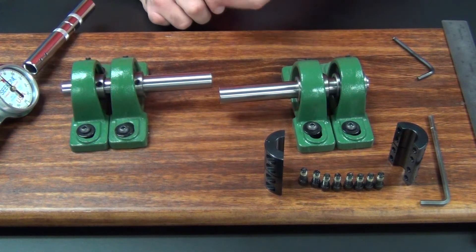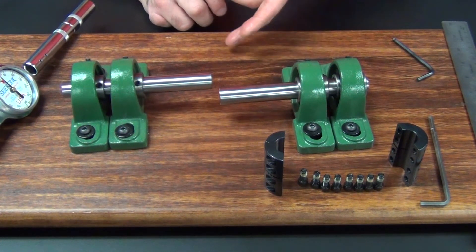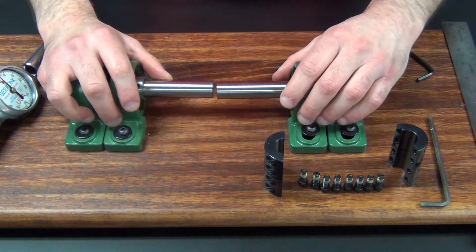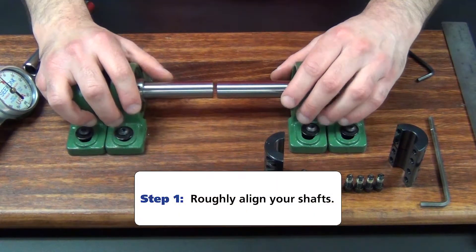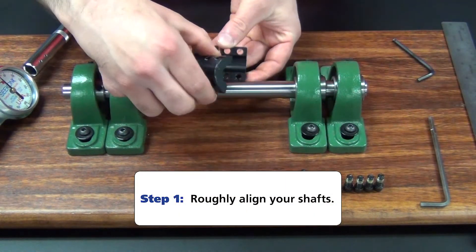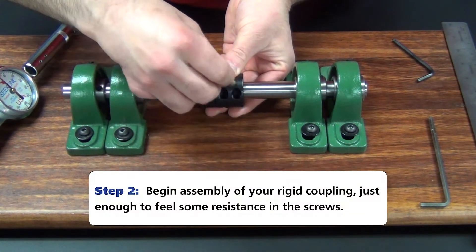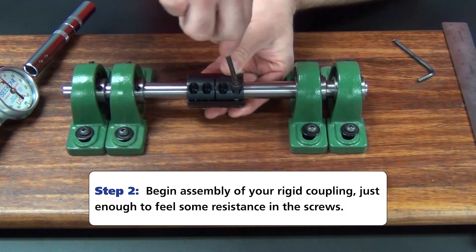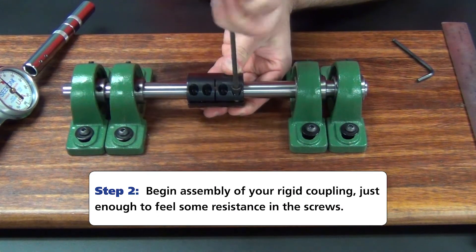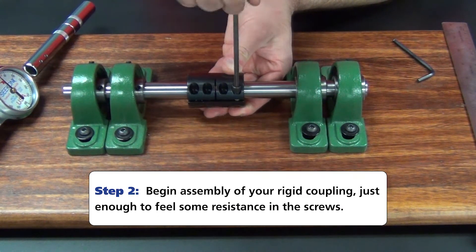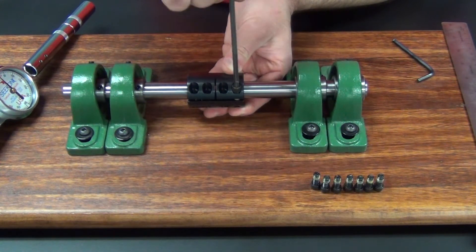I'm starting with these two shafts well out of alignment for effect on the video. I'm going to pull them into something that resembles a straight line and then start assembling roughly my rigid coupling by hand. I'm not worried about gaps or anything like that at this point. All I want to do is install the screws to a point where I'm feeling a little bit of resistance.